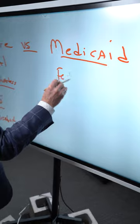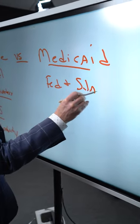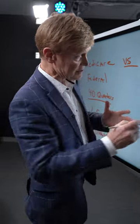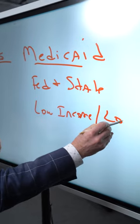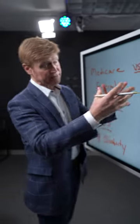Medicaid is entirely a federal and state-funded program. It has nothing to do at all with any age. What it has to do with is: do you have low income and do you have low assets? Because if you do, then you may qualify for Medicaid.